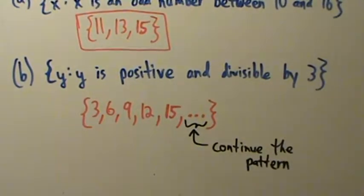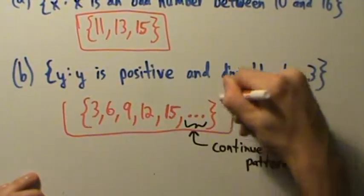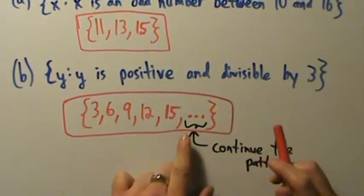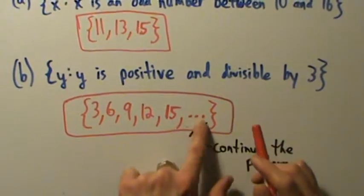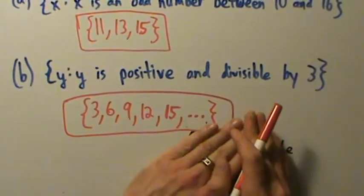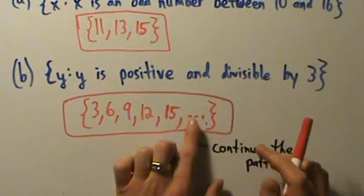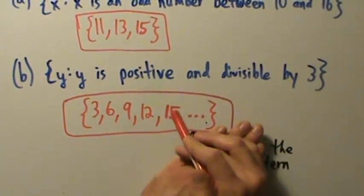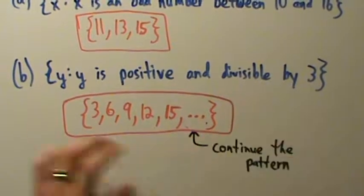Anyway, that's the answer for part B. So just this set here with three dots. And then this is part of that there. So that's our answer for part B. Okay, remember, these three dots just mean continue the pattern. So 3, 6, 9, 12, 15, dot, dot, dot.